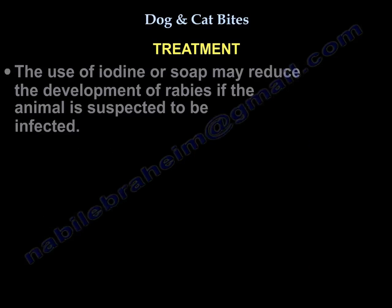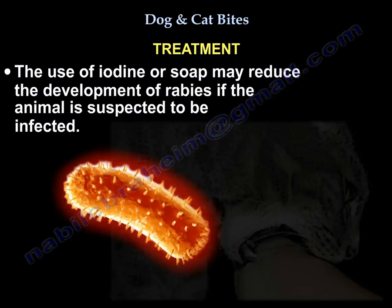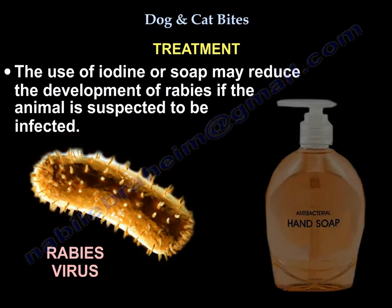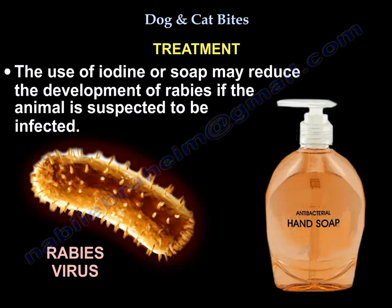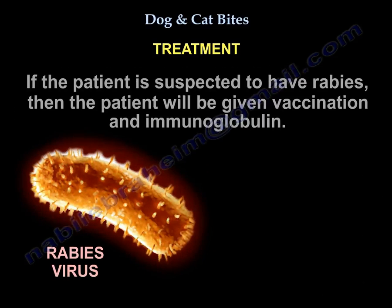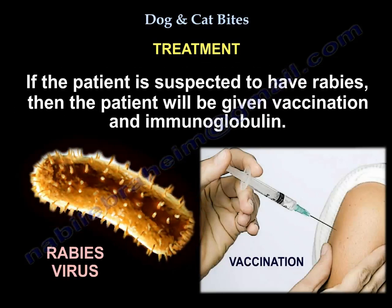Iodine or soap may reduce the development of rabies if the animal is suspected to be infected. If the patient is suspected to have rabies, the patient will be given vaccination and immunoglobulin.